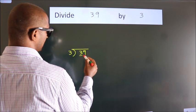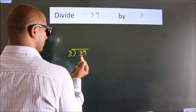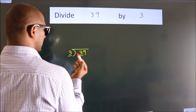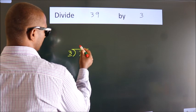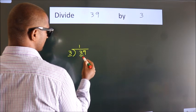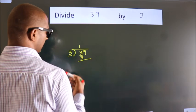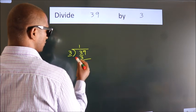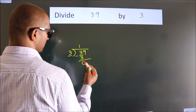Here we have 3. When do we get 3? In 3 table — 3 once is 3. Now we should subtract. We get 0.